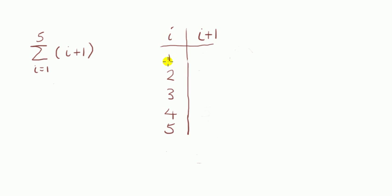When i is one this term here is two being one plus one. When i is two the term here is two plus one, three. When i is three the term becomes four. You can see that the remaining terms are five and six.